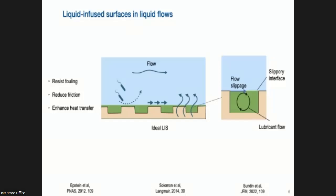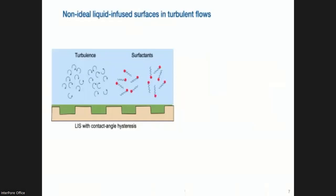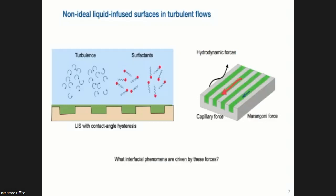So there's all these neat functions that you can achieve with LIS. However, usually in practice, the surfaces are non-ideal. We have contact line hysteresis, for example. Also, the flow field is not perfectly laminar and perfectly clean. So we have turbulence, fluctuations in particular in larger scale systems, and we also have surfactants. It turns out that there is a very rich physics of the surfaces when we let go of these ideal assumptions and ideal settings to realistic configurations.